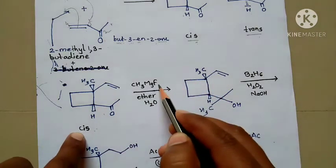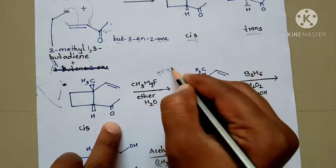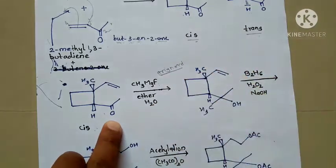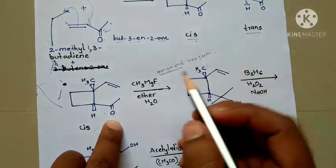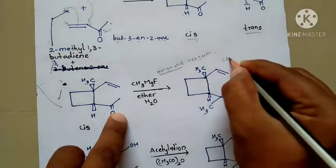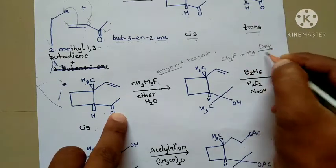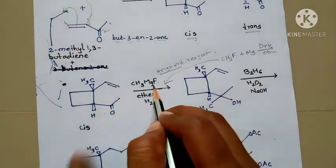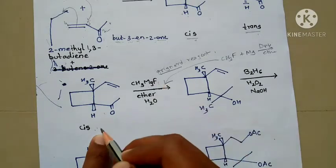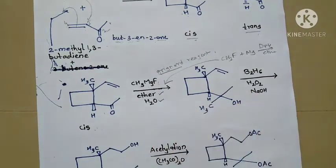This cis form reacts with methyl magnesium fluoride — that is, Grignard reagent. How is the Grignard reagent formed? When methyl fluoride reacts with Mg in the presence of dry ether, you get this Grignard reagent. This Grignard reagent is added into the cis isomer of the step-one product in the presence of ether, and then hydrolysis takes place.